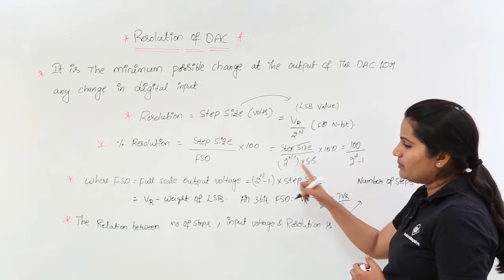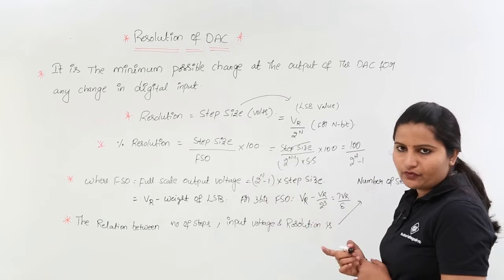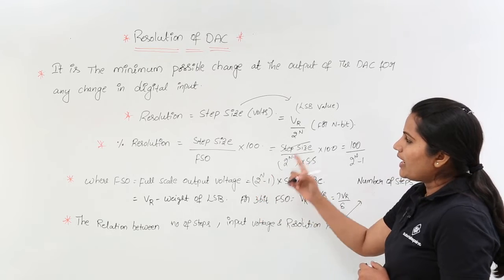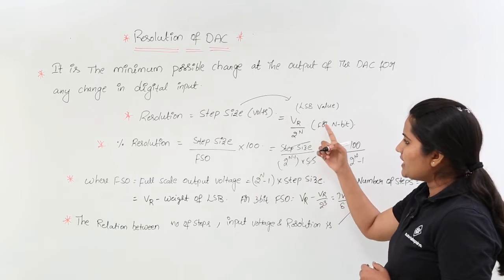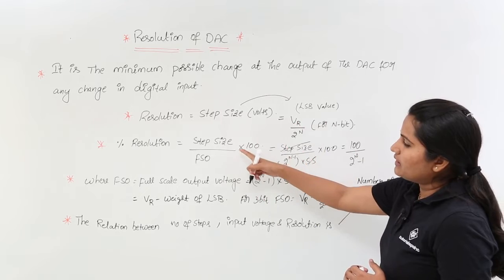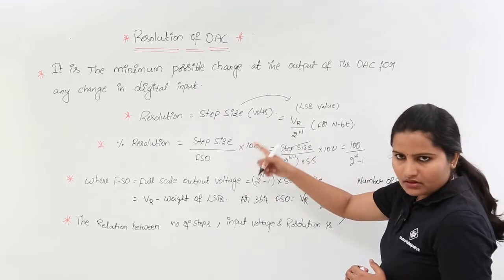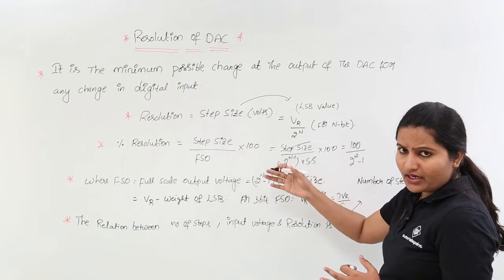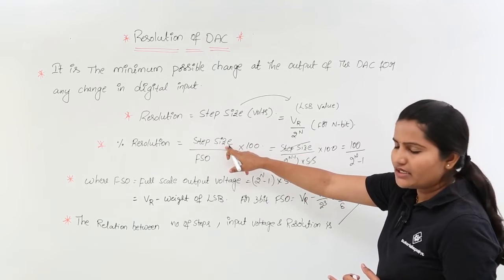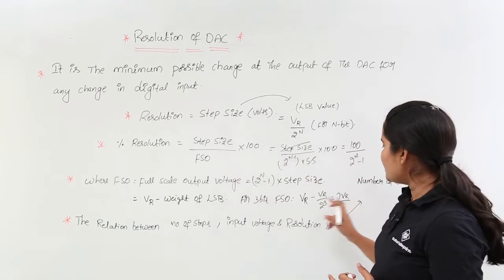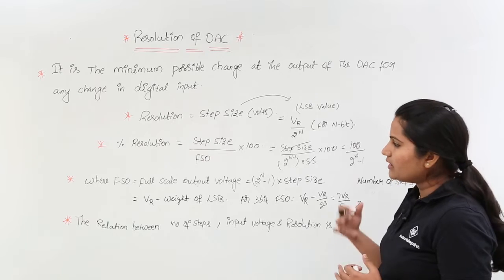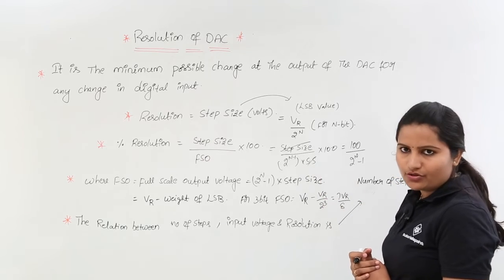So 7VR by 8 will be your FSO, and your step size is VR by 8. Taking these values — step size VR by 8 divided by FSO 7VR by 8, into 100 — gives you the percentage of resolution.